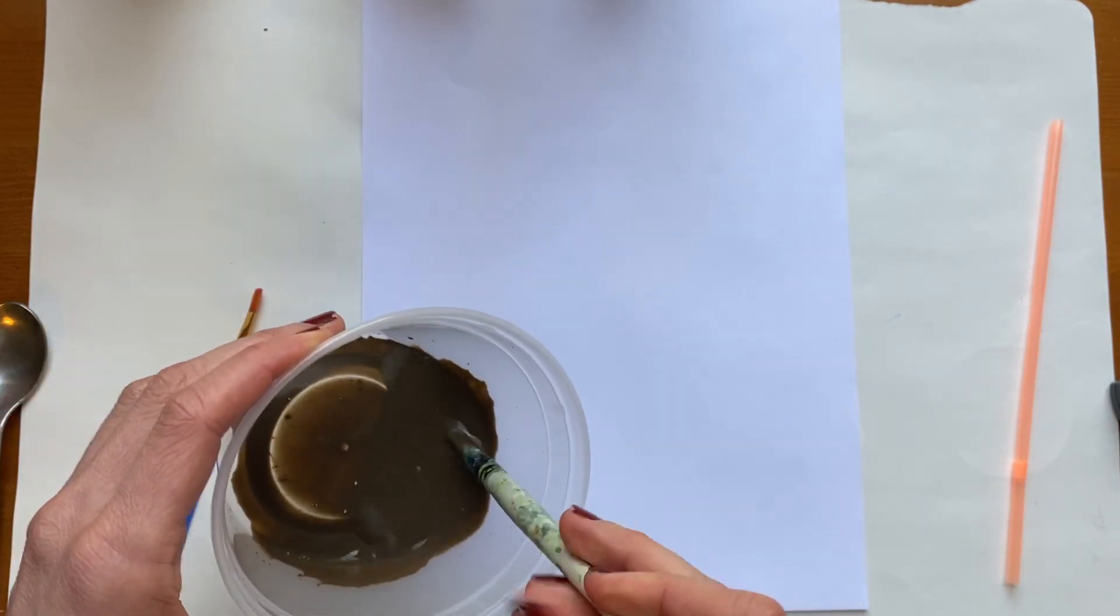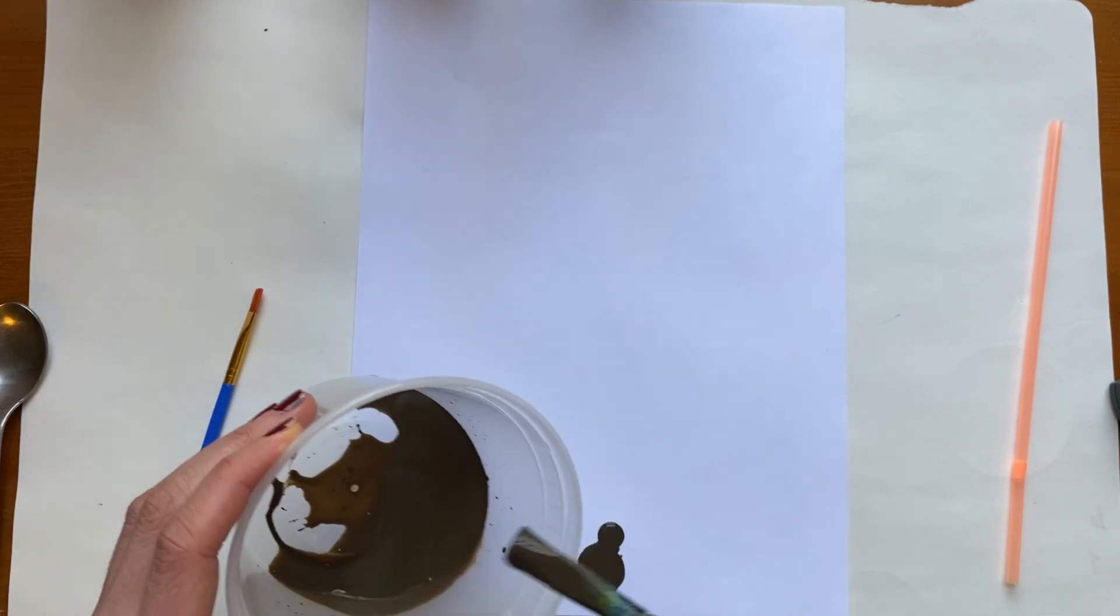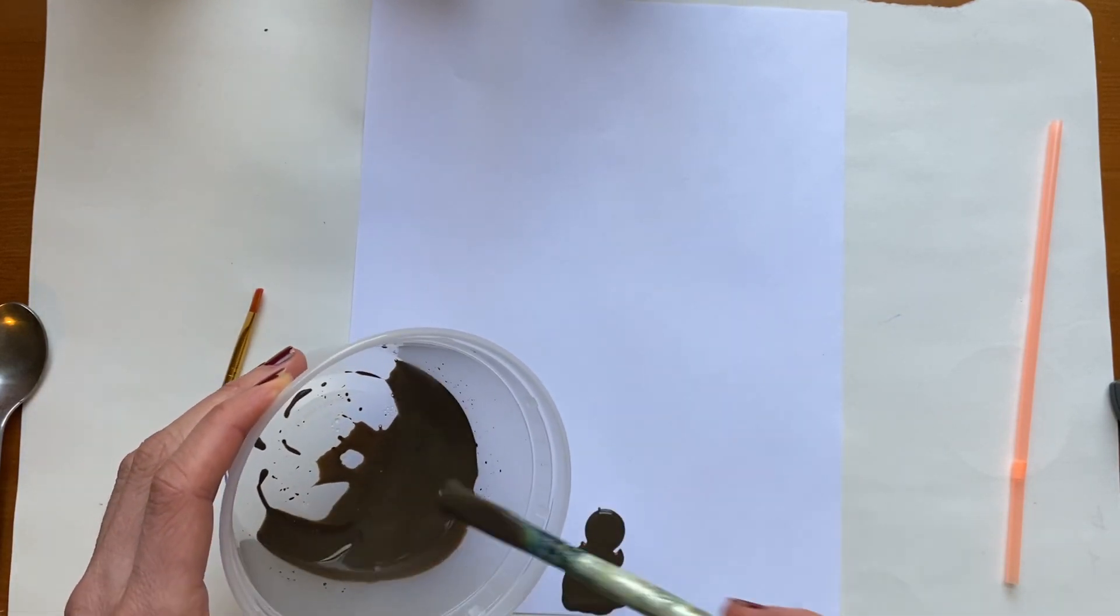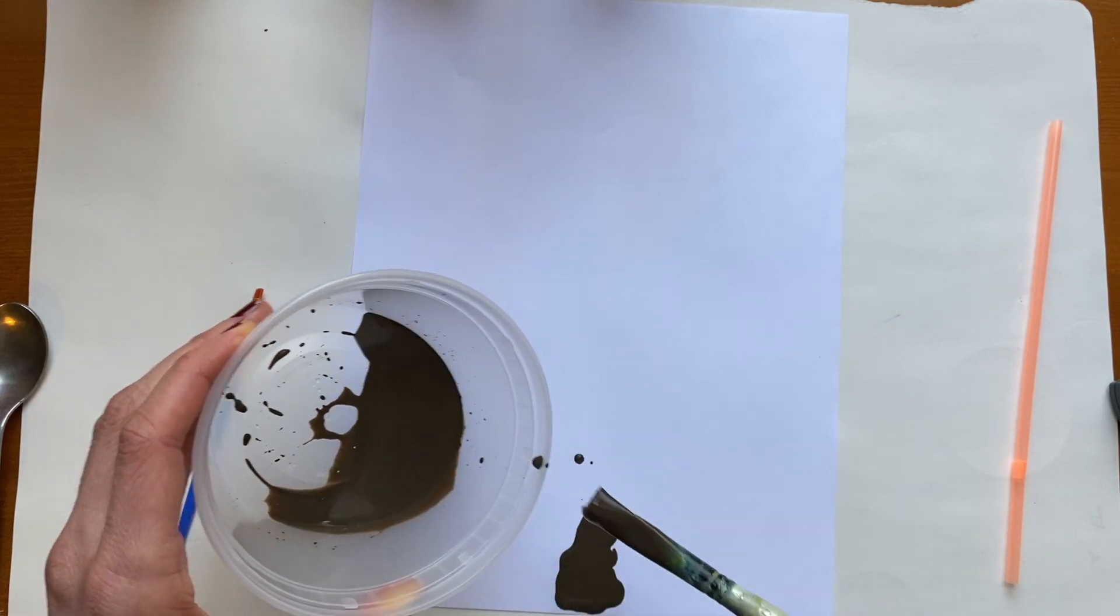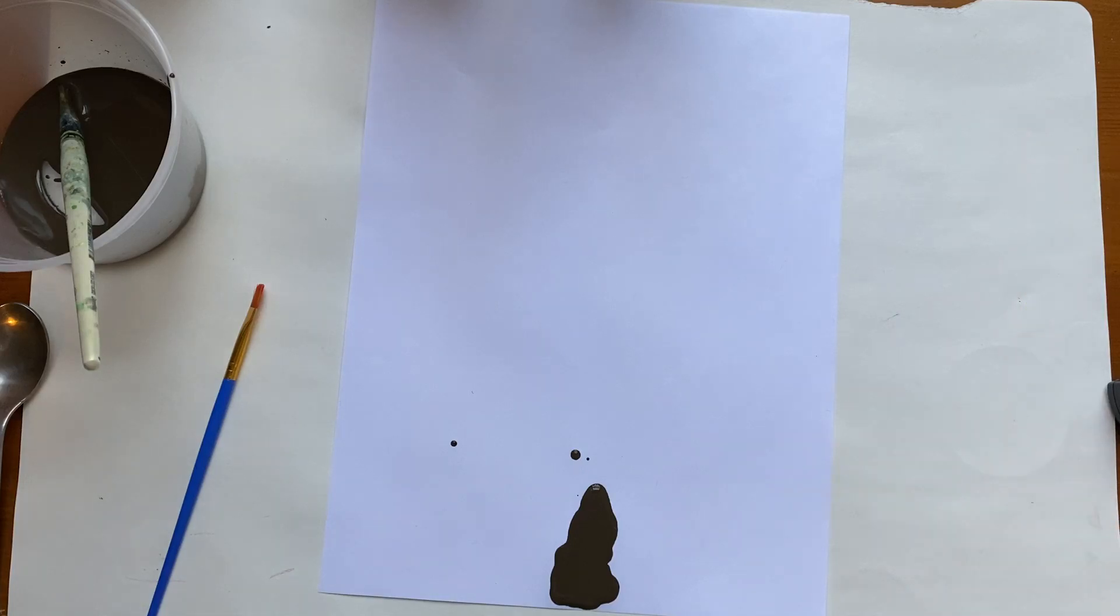So watch what I do here. I'm gonna start at the bottom where the branch is the biggest, getting a bunch of that on the paper. And now I'm going to take my straw and I'm gonna blow it in one direction. Okay, so here I go.